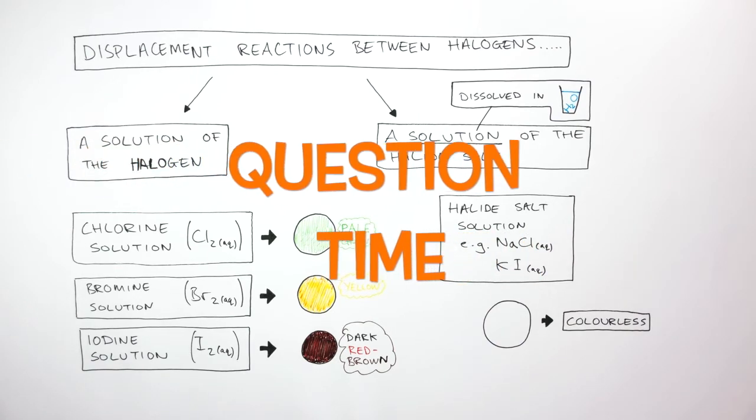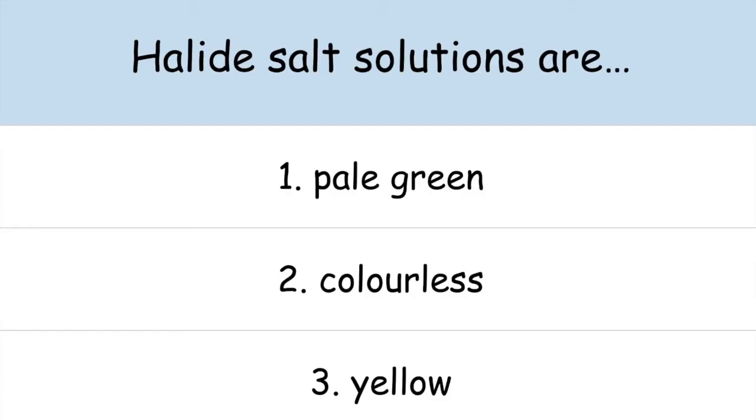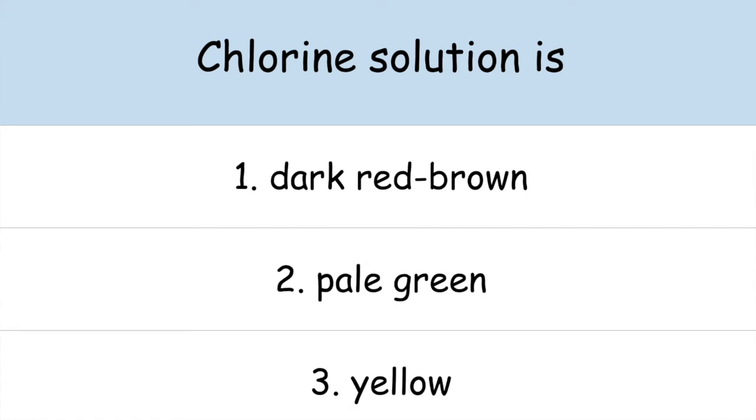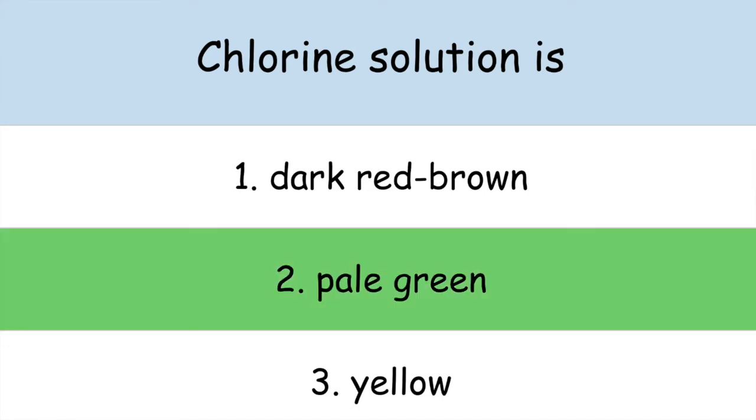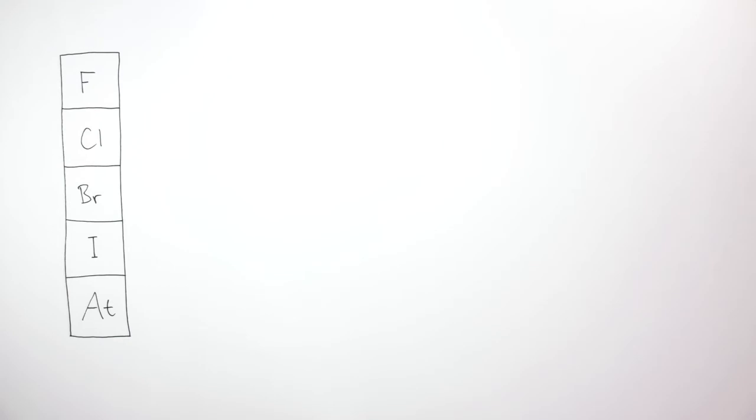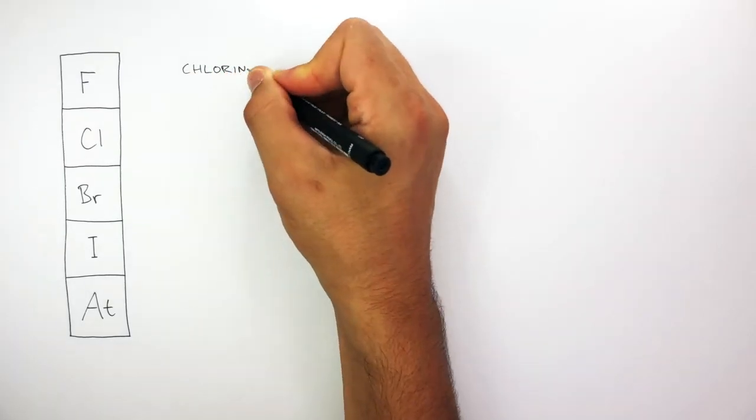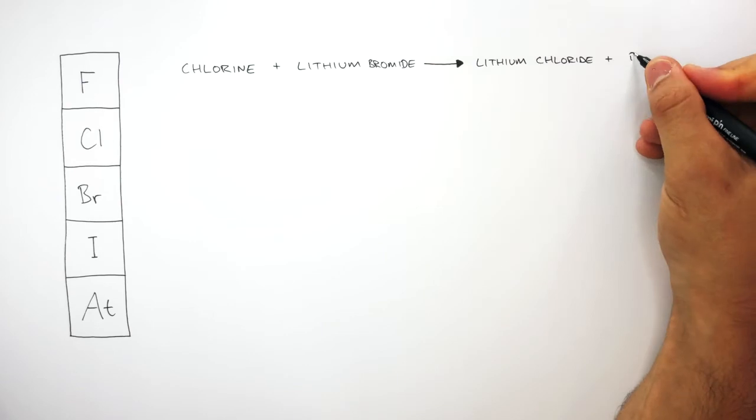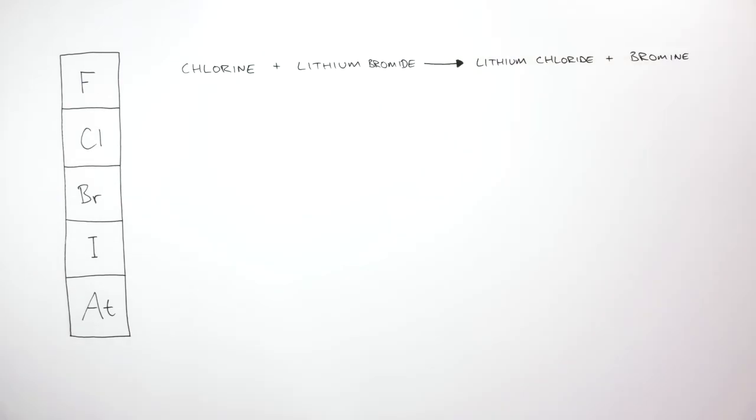It's question time. Attempt these questions to check your understanding. We're now going to build on what we've just learned to understand what happens when chlorine reacts with lithium bromide to produce lithium chloride and bromine. Pause the video now to write the balanced symbol equation for this reaction.